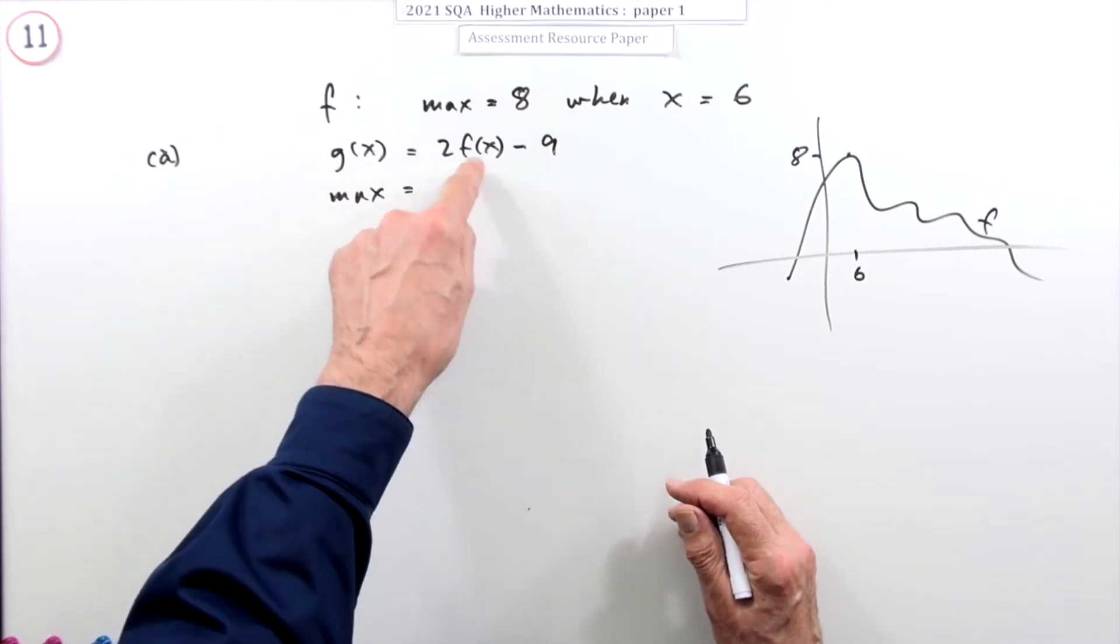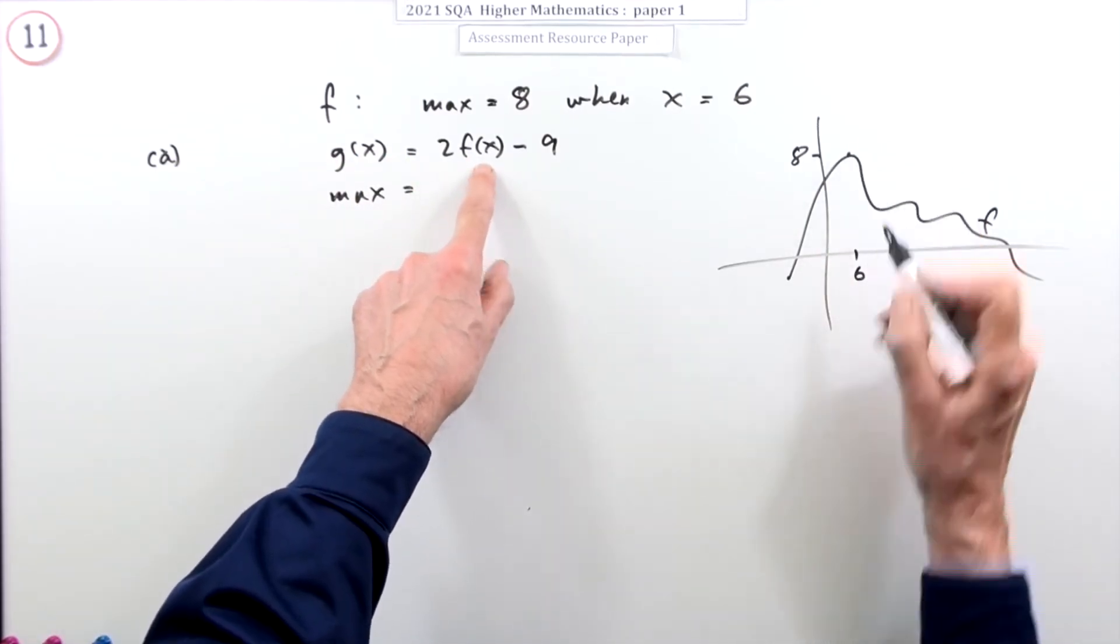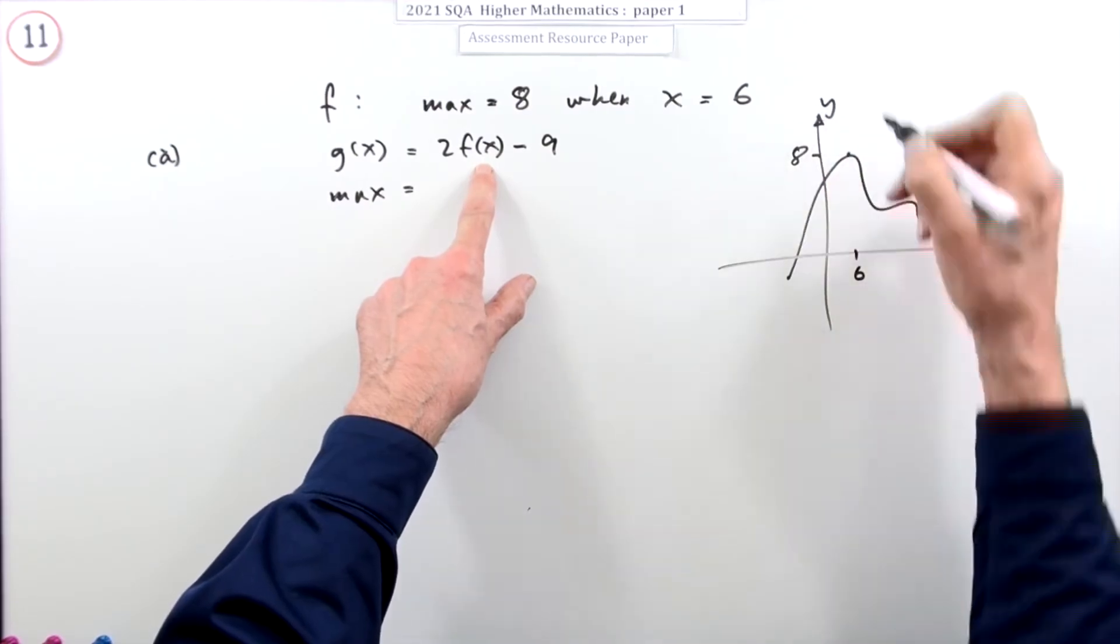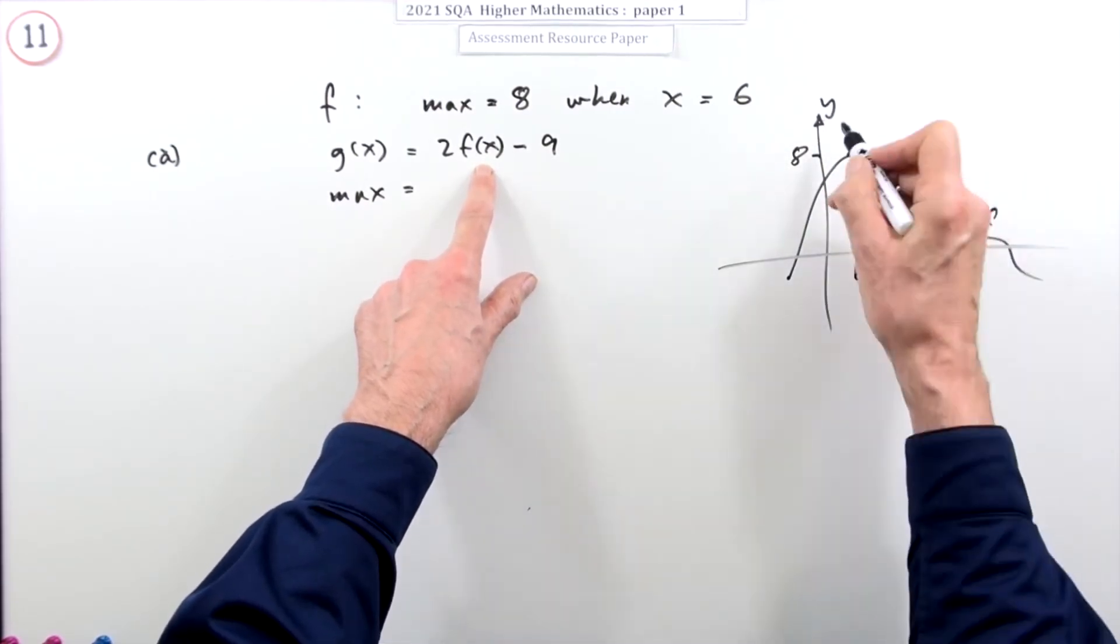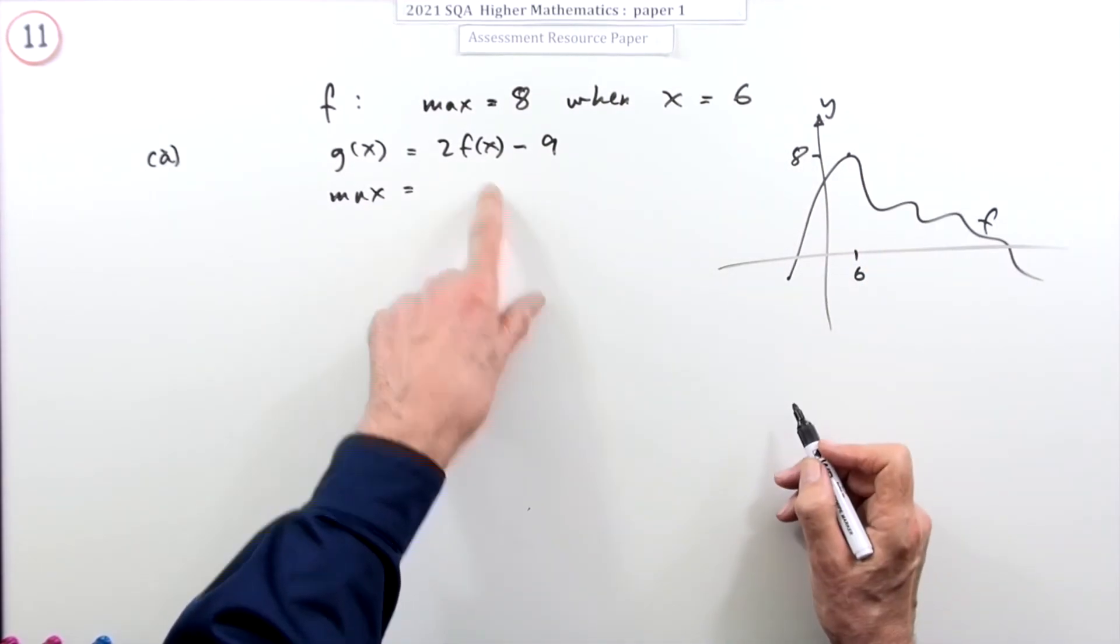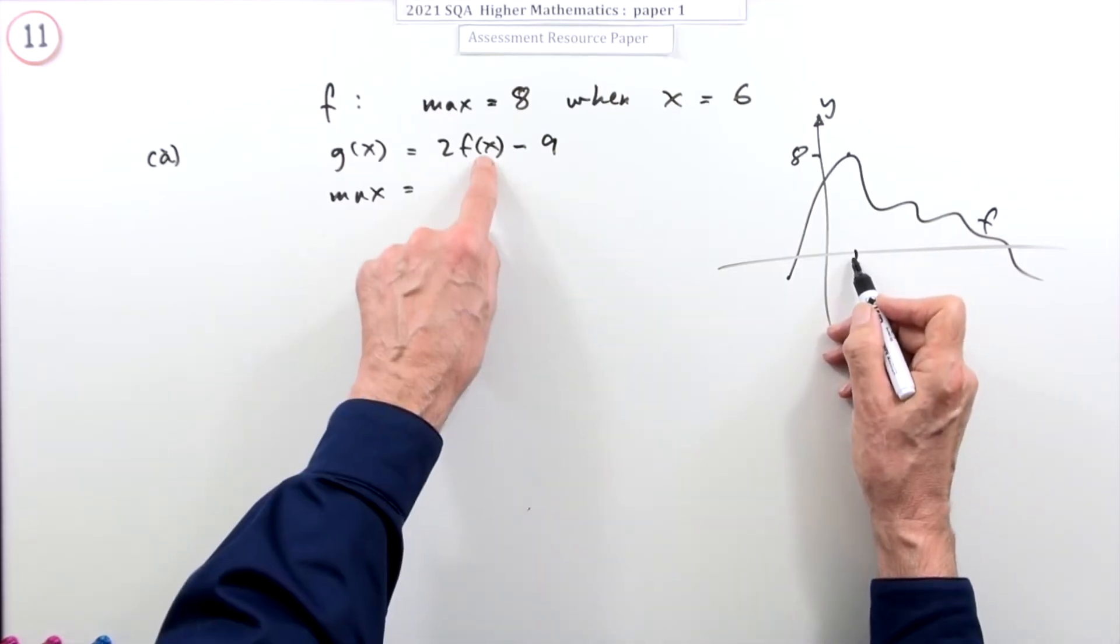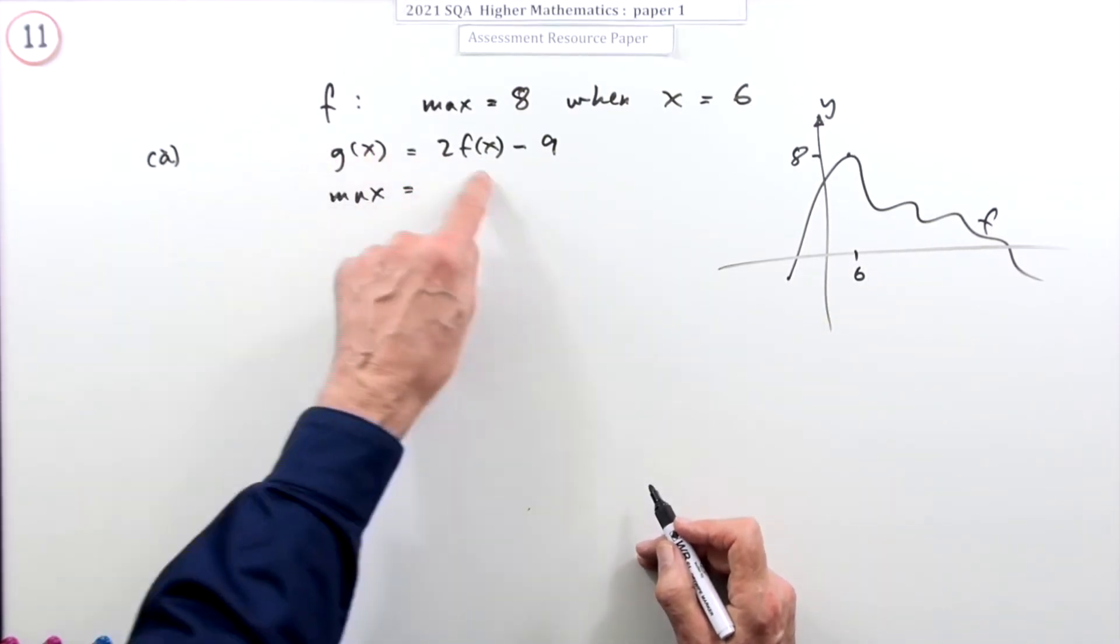Remember the values are the heights, that's what you plot when you plot the y coordinate. You're plotting the value of the function wherever the input number was. So this is just about heights.